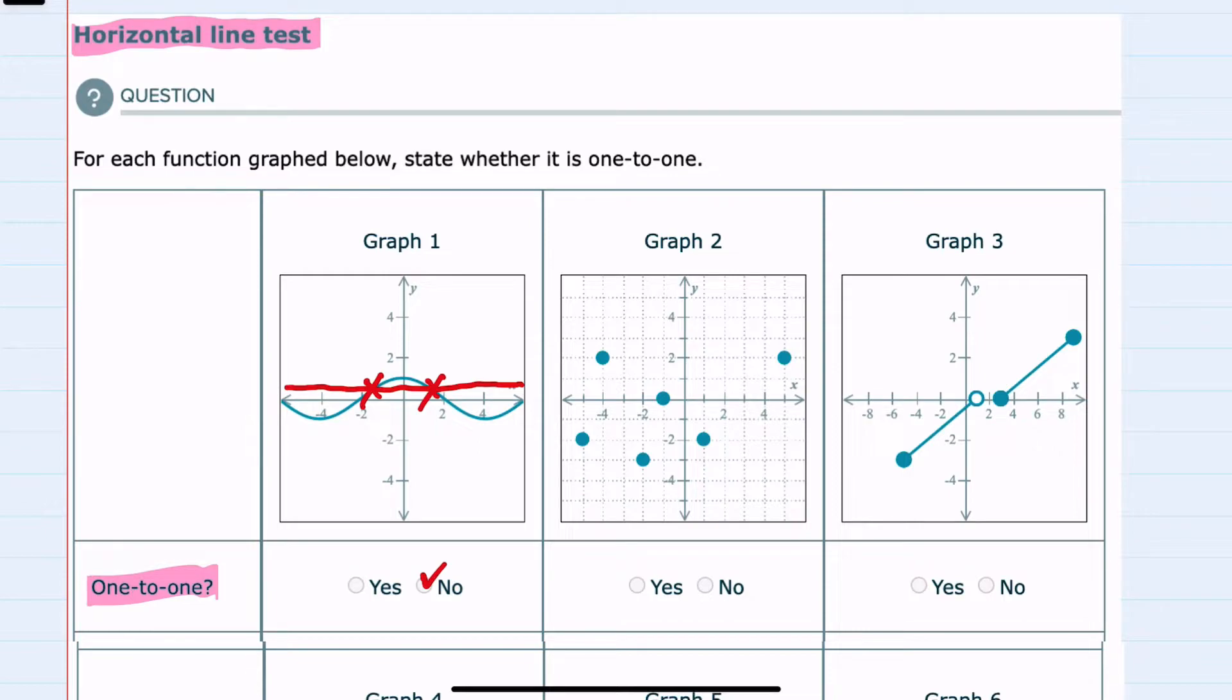So graph one here is not one-to-one. It failed the horizontal line test.